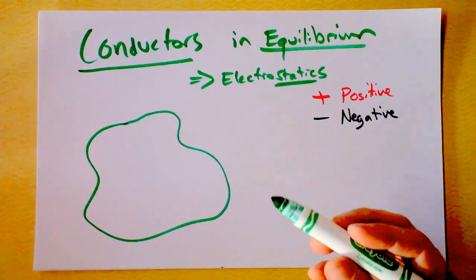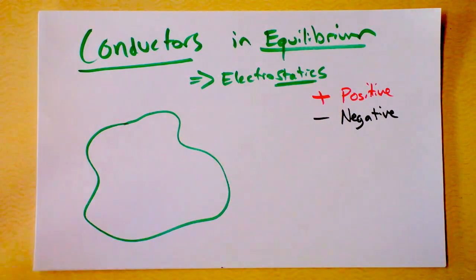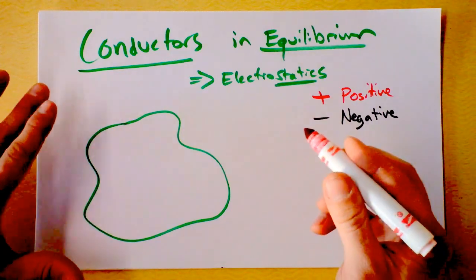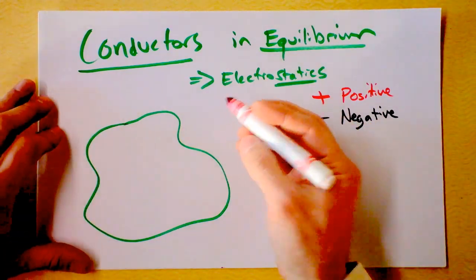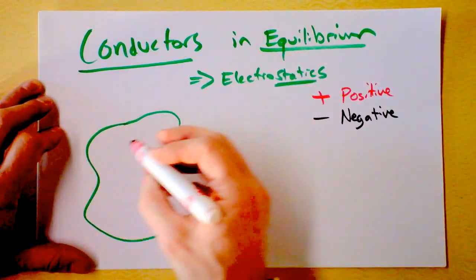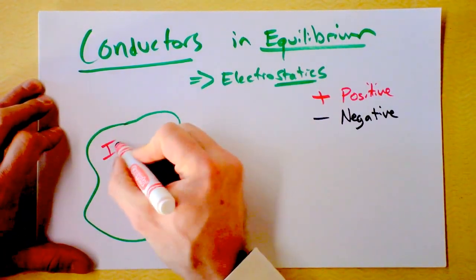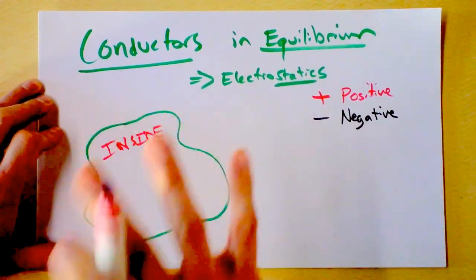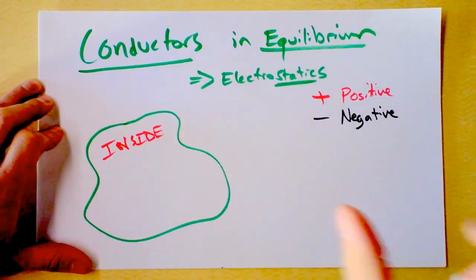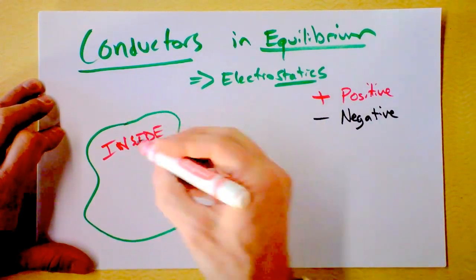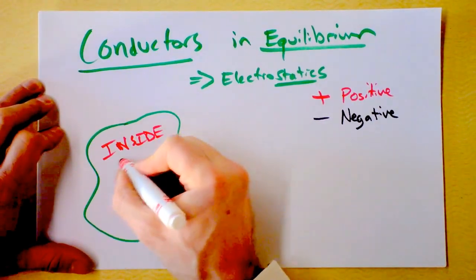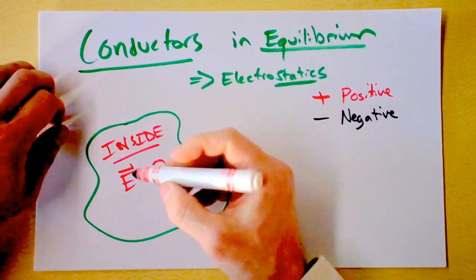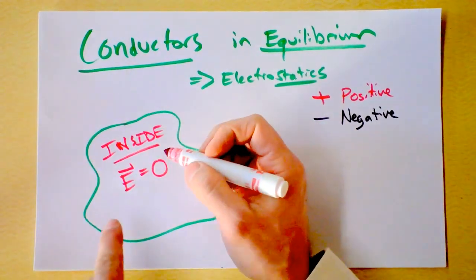If you've got a conductor and it's just some blob of metal, the first rule of conductors in equilibrium is that if you splatter some excess charge inside the conductor, the charges will move around until the electric field inside is exactly zero.